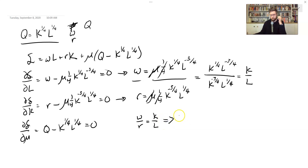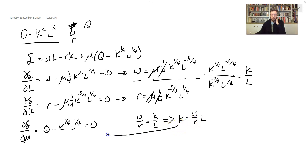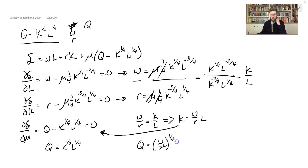Solving for K, we get K equals W over R times L. This tells us: if you have more labor, you should hire more capital; if the cost of capital R is high, hire less capital. Now we take this and bring it into our last equation. Plugging in for K, we get Q equals W over R times L to the 1/4th times L to the 1/4th. This simplifies to Q equals (W/R) to the 1/4th times L to the 1/2, because 1/4th plus 1/4th gives 1/2.